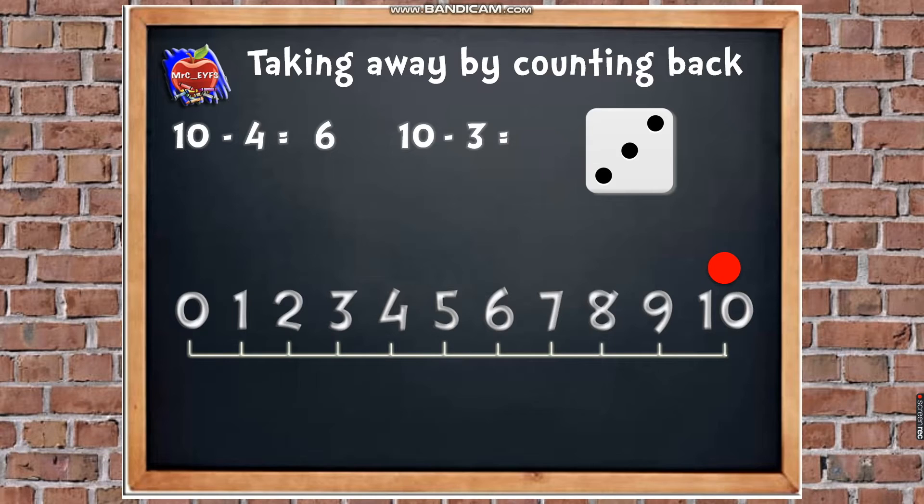What do I have to do? You tell me. Yep, so we have to count back 3. So how many jumps? 3. Excellent. Let's do 3 jumps. Are you ready? I'm going to go 1, 2, 3. What have we landed on? 7. Excellent. So 10, take away 3, equals 7.